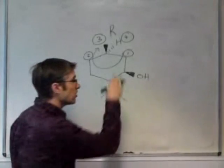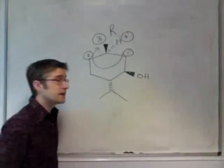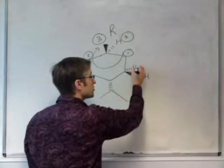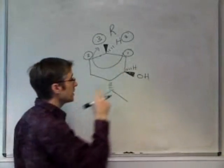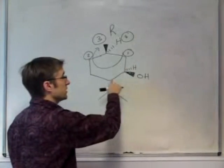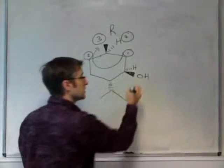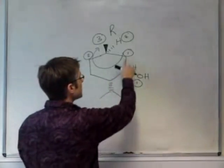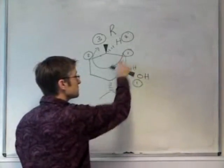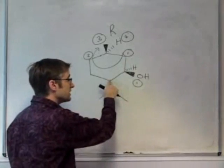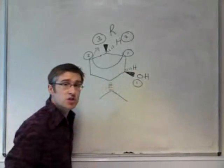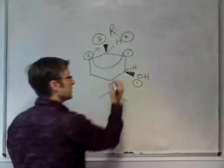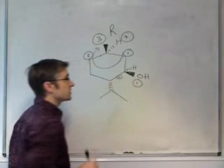We're now going to do the same on the second chiral center in this molecule. Again, we'll show the hydrogen going backwards. The highest priority group now is this oxygen. It beats these carbons. So this we label as one. We then look at these two carbons. This has two hydrogens attached. This carbon has a carbon chain attached. So this carbon outranks this carbon.